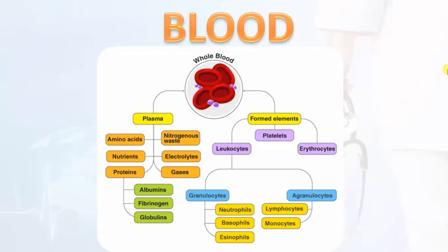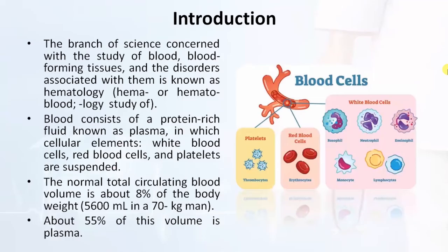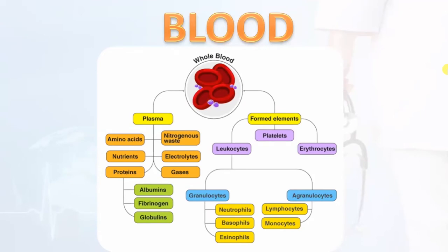Formed elements are basically leukocytes, also called WBC or white blood cells. These are granulocytes and agranulocytes. Granulocytes are neutrophils, basophils, and eosinophils. Agranulocytes are lymphocytes and monocytes. Other formed elements are platelets and erythrocytes, also known as RBC or red blood cells.